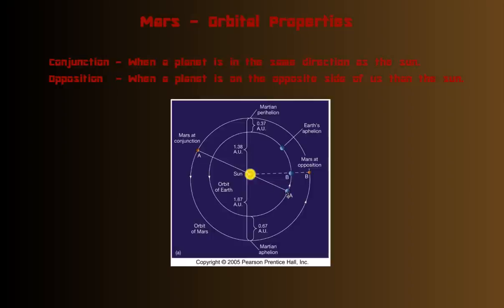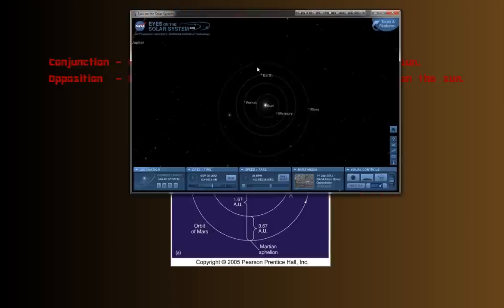But if you're standing here on Earth and you look towards the Sun, and Mars is on the other side of the Sun, then you'll see Mars at the same time. A little hard to see from this picture, but let's take a look at it through Eyes.